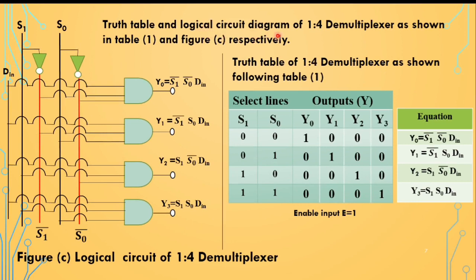The truth table and logical circuit diagram of the 1 by 4 demultiplexer are shown in the table and figure respectively. Here s1 and s0 are the two select lines with four combinations. When the select is 0, 0, output y0 is activated and the remaining outputs are 0. When the select is 0, 1, y1 is activated. For select 1, 0, y2 is activated. And for select 1, 1, y3 is activated and all remaining outputs become 0.